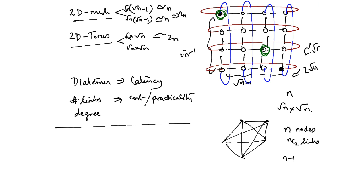People have gone beyond 2D mesh and 2D torus to 3D mesh and 3D torus, which are quite common. You can imagine what a 3D mesh/torus looks like — make it a cube: n^(1/3) × n^(1/3) × n^(1/3) — and you can add wrap-around links in all 3 directions, so each node would have 6 neighbors. As you increase the dimension, it becomes more dense: the cost goes up because there are more links and it becomes more challenging to build, but the diameter reduces and latency reduces.